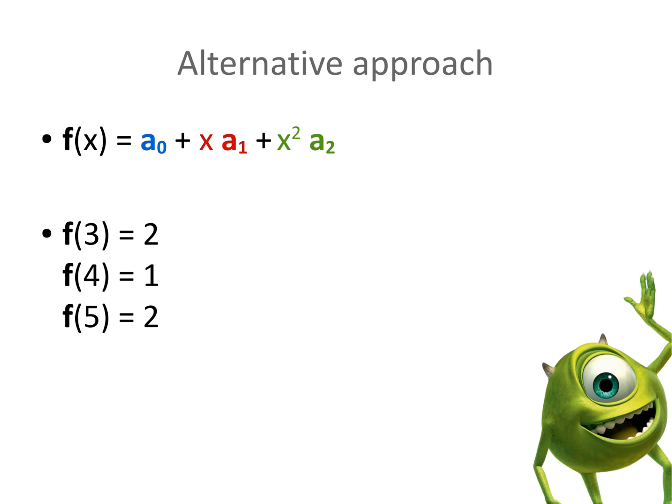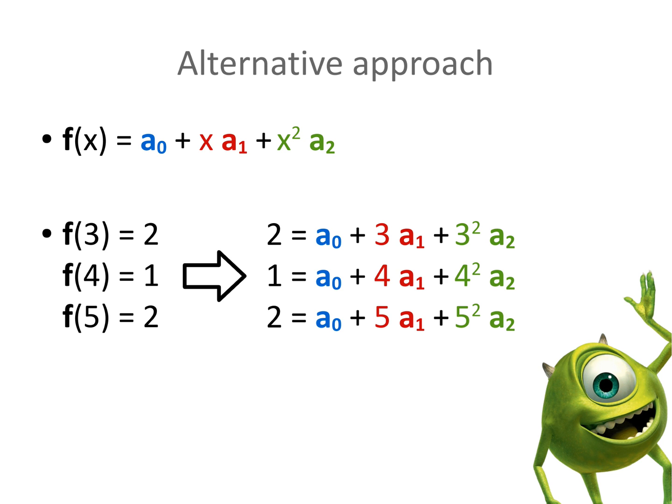First, let's plug in the parameterized definition of f into these equations. That is, instead of saying that 2 is equal to f of 3, we say that 2 is equal to a0 plus 3 times a1 plus 3 squared times a2. Similarly, we can rewrite f of 4 and f of 5. Nothing too remarkable happening here.